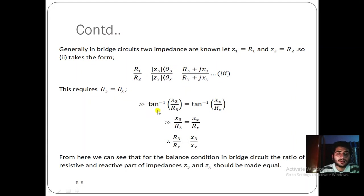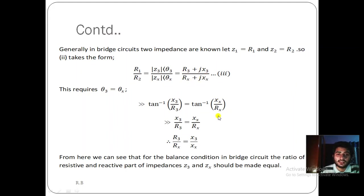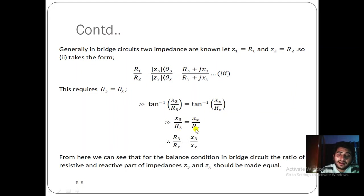For the angle, we write tan⁻¹(y/x). For Z3 in rectangular form x+jy, the angle is tan⁻¹(X3/R3), and for Zx it is tan⁻¹(Xx/Rx). Since θ3 = θx, we can cancel tan⁻¹ from both sides, giving X3/R3 = Xx/Rx, or equivalently R3/Rx = X3/Xx.